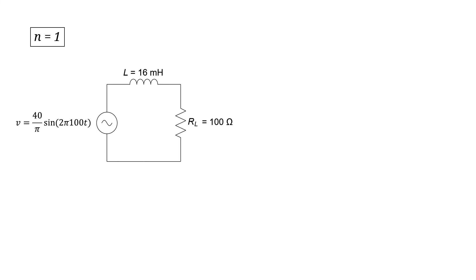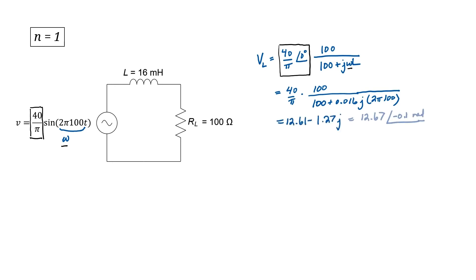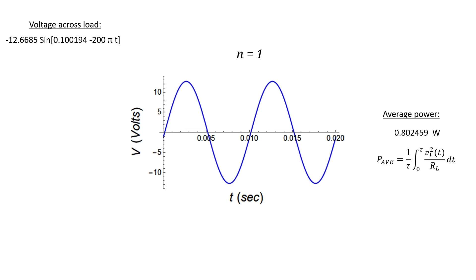Starting with the n=1 source with all other sources zeroed out: since this source is sinusoidal, I can use phasors and voltage division to find the voltage across the load. The key thing to note when changing n is that both the amplitude and omega will change. After substituting in omega and inductance L, the phasor form of the load voltage is a complex number that we can write in both rectangular and polar form. From the phasor form I can write the time domain voltage across the load due to the n=1 source. Plotting this, it's just a sine wave, and integrating over one period shows the average power due to this source alone is 0.8 watts — though this is just one component, not the real load voltage.